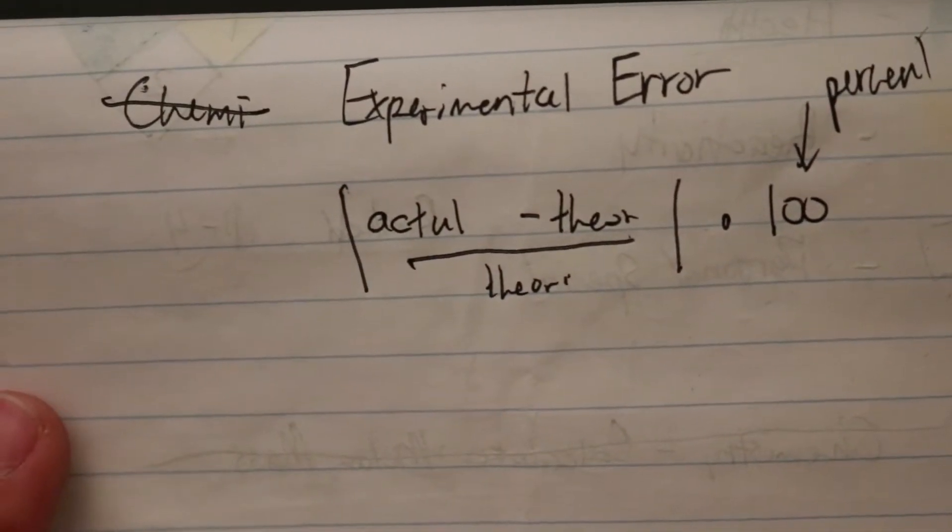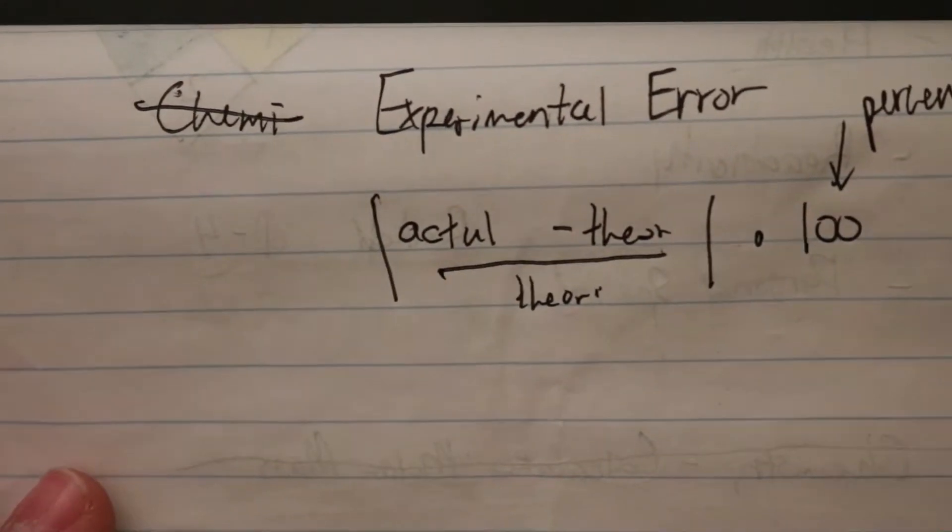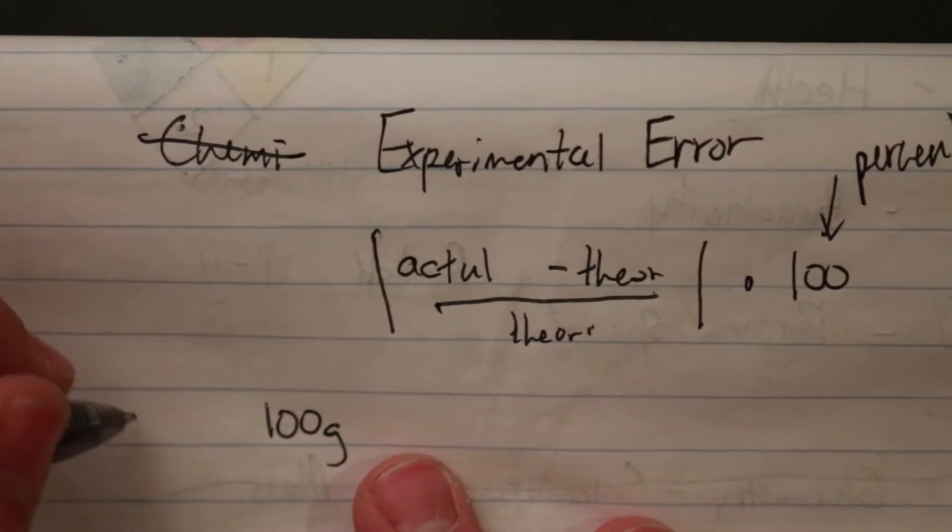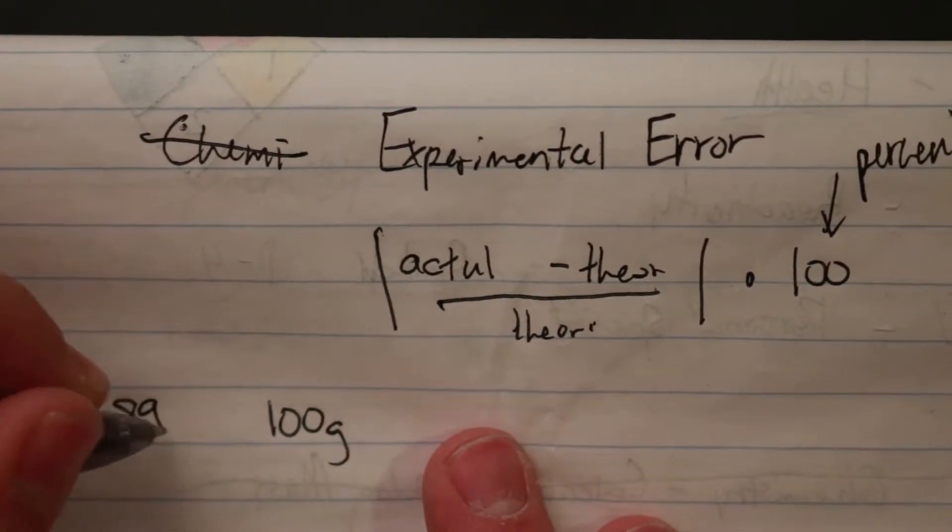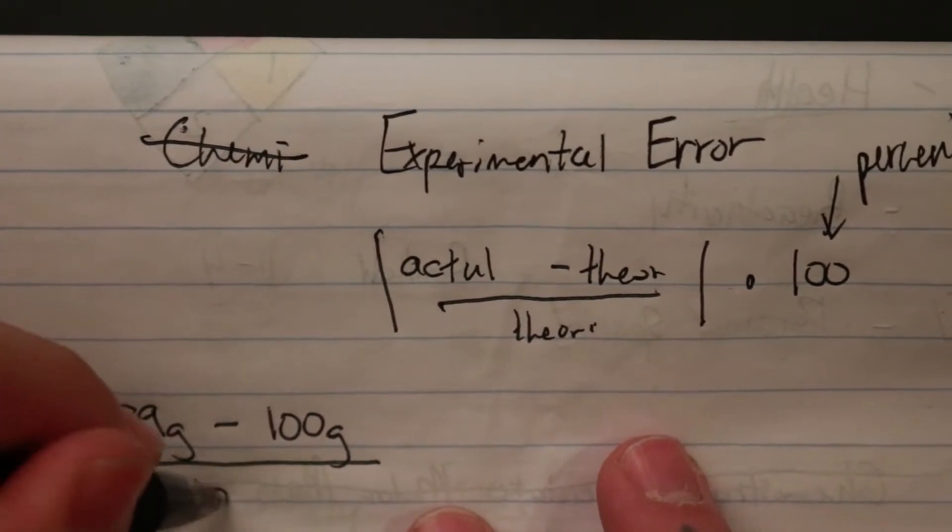So how does this look like in a chemistry lab? So if I theoretically calculate using stoichiometry that I should get 100 grams of something, but I only produce 89 grams, I'm going to subtract that, and then I'm going to divide by my theoretical, 100 grams.